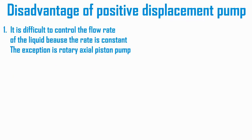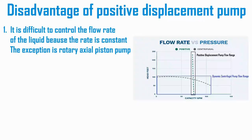The disadvantages of the rotary positive displacement pump compared to a dynamic pump or centrifugal pump: the flow rate of a rotary positive displacement pump is fixed, making it difficult to handle fluids that require flow control. The only exception is the rotary axial piston pump.